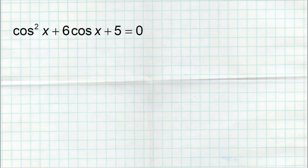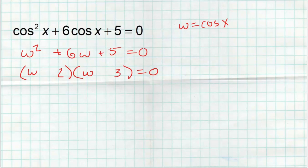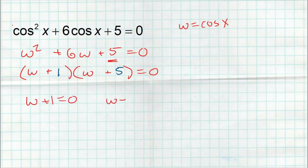Last problem of the day — another factoring one. Using w substitution, I need to factor 2w squared plus 6w plus 5. Breaking apart the w squared into w and w. For 5, I try 2 and 3 — but 2 times 3 is 6, that doesn't work. Since 5 is prime, the only factors are 1 and 5, both positive, so they multiply to give positive 5. Outside gives 5w, inside gives 1w, making 6w in the middle. So w plus 1 equals 0 or w plus 5 equals 0, giving w equals negative 1 or w equals negative 5.